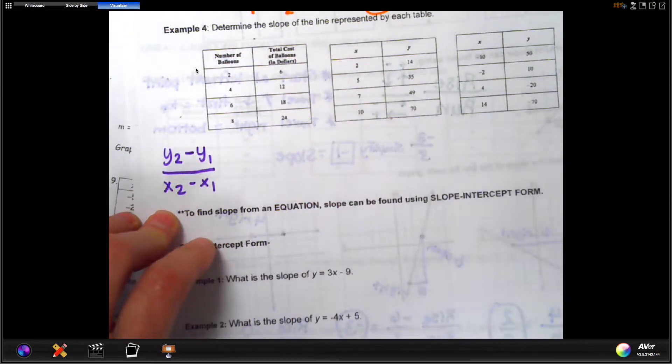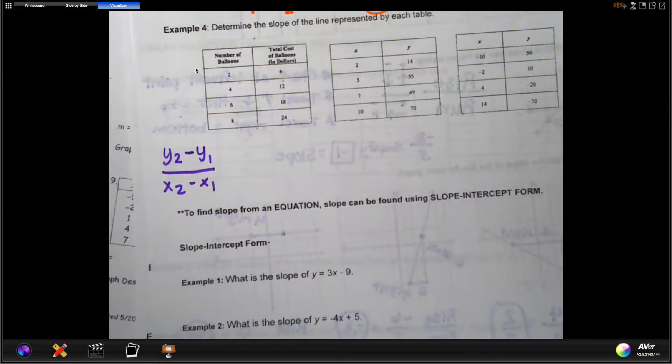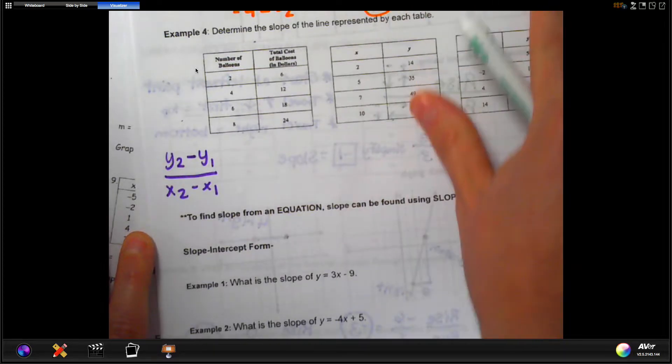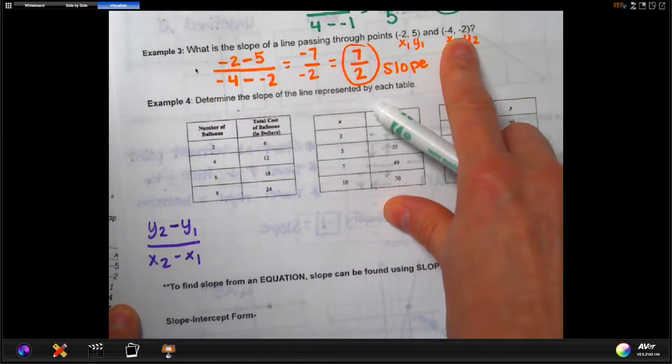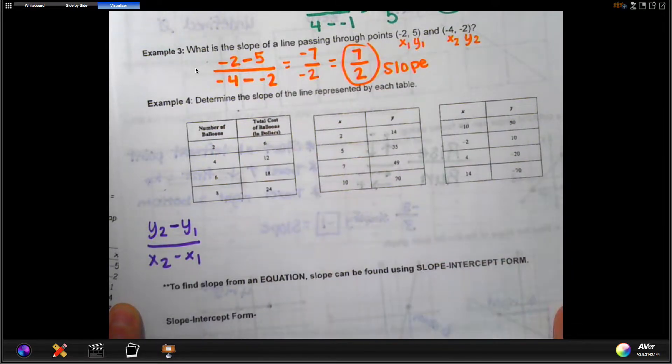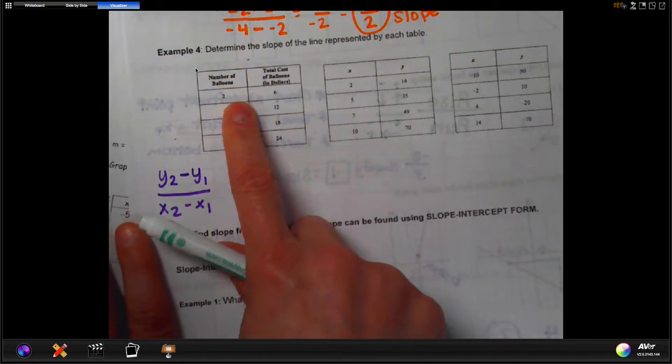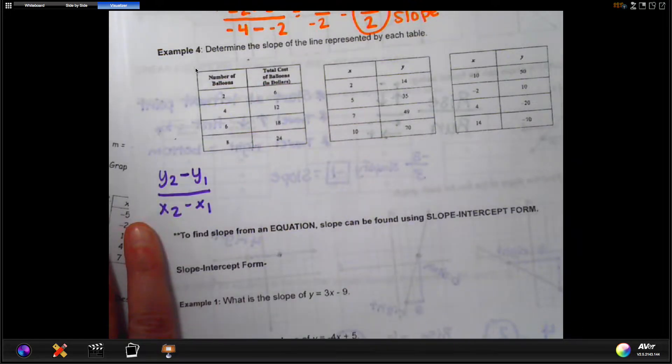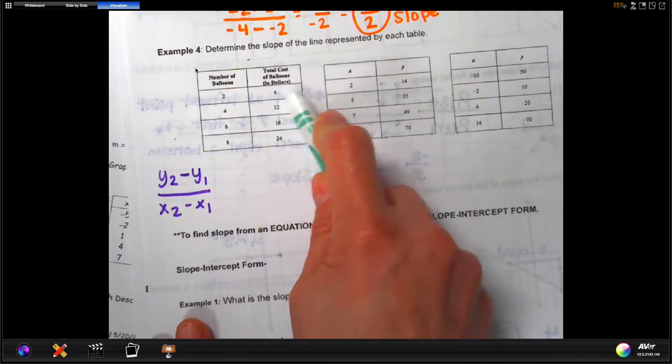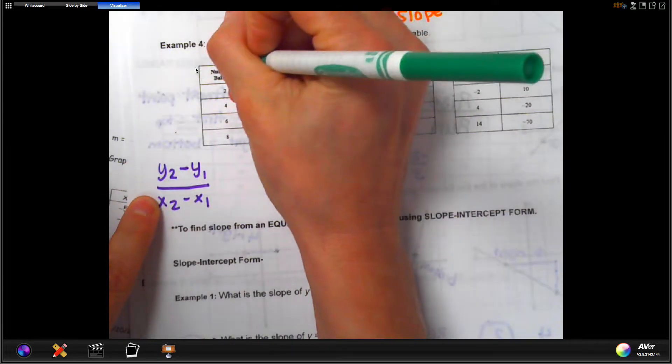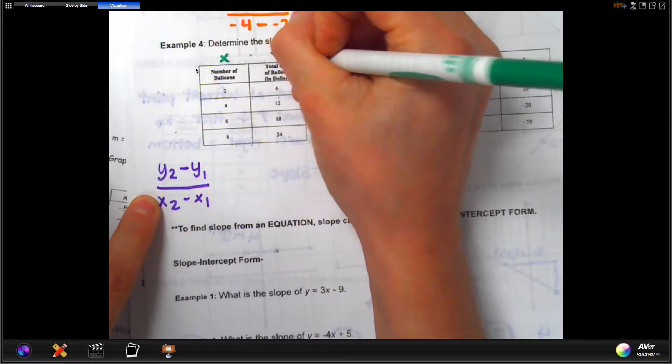From a table, we are still going to use that same slope formula. We're going to use the formula y2 minus y1 divided by x2 minus x1. Now, on a table, what you have to realize is that all of these sets are actually ordered pairs. So the ordered pairs that we had in the examples above were written with parentheses, like negative 2, 5 and negative 4, negative 2. Tables are actually sets of ordered pairs. So in this table, the first one, it says number of balloons and then the total cost of balloons in dollars. Well, it says if you have two balloons, it's going to cost you $6. That's actually, it can be written as an ordered pair where the left column is the x column and the right column is the y column.